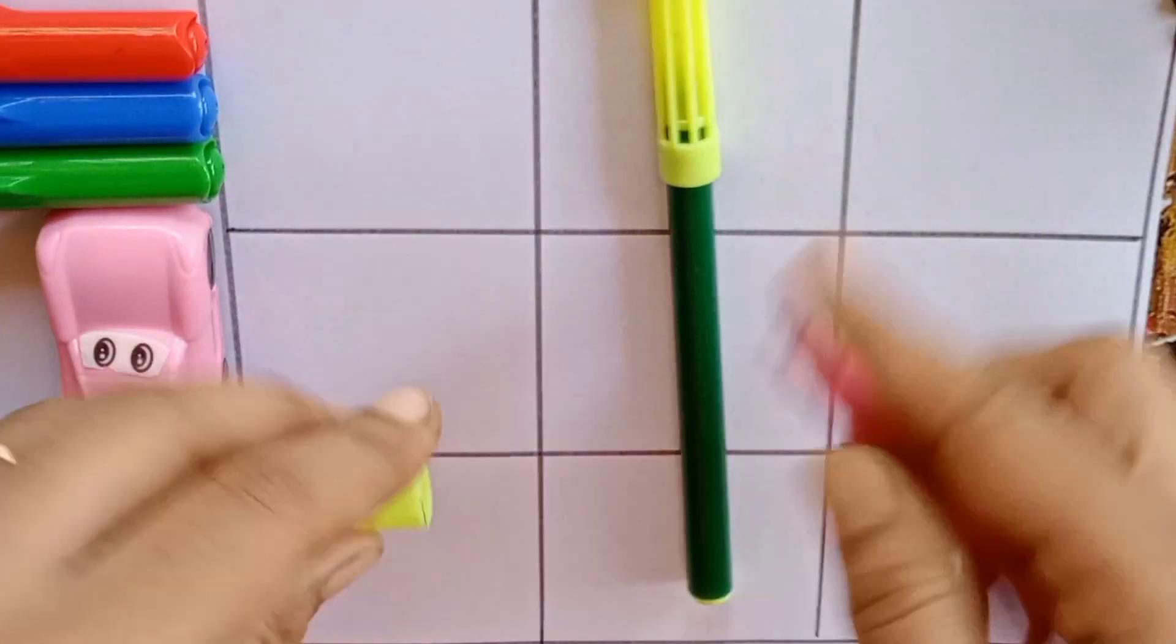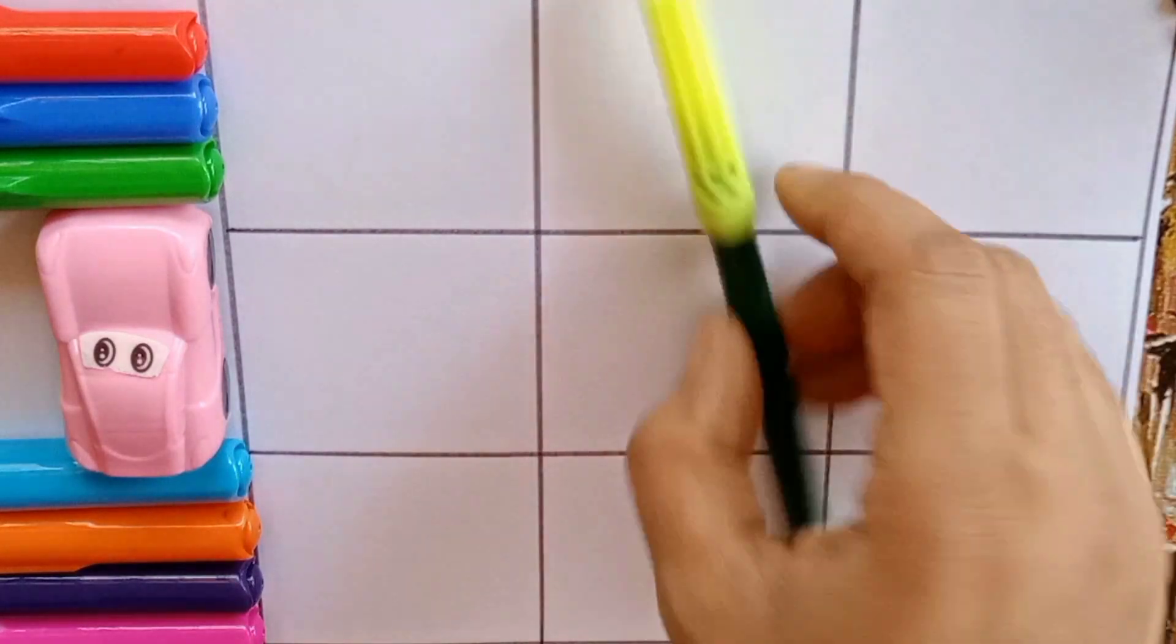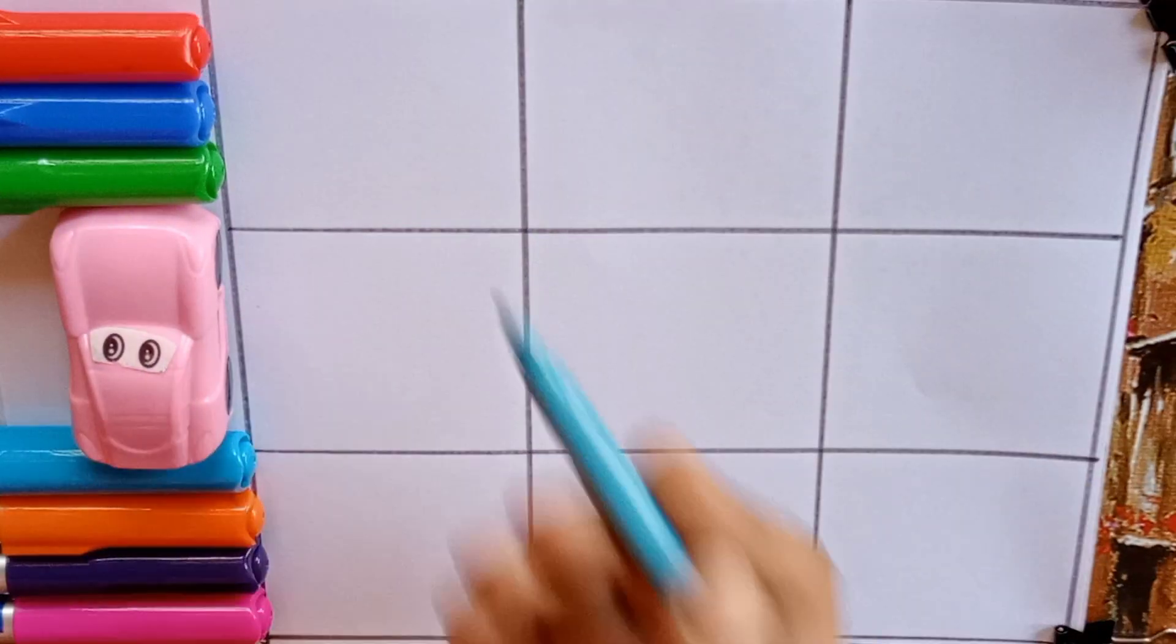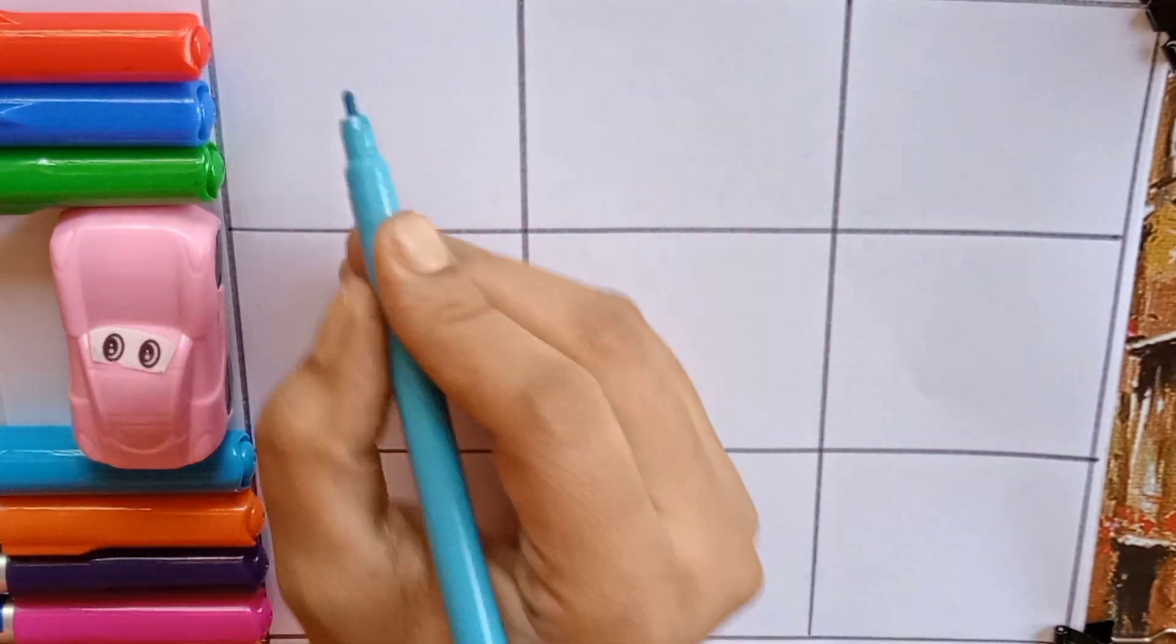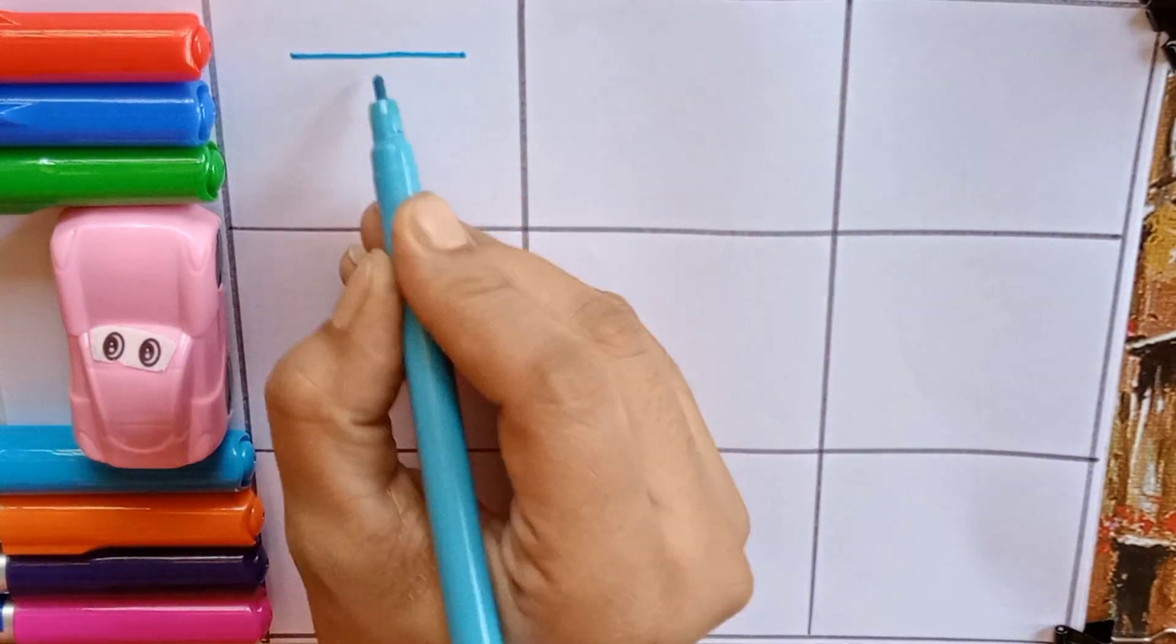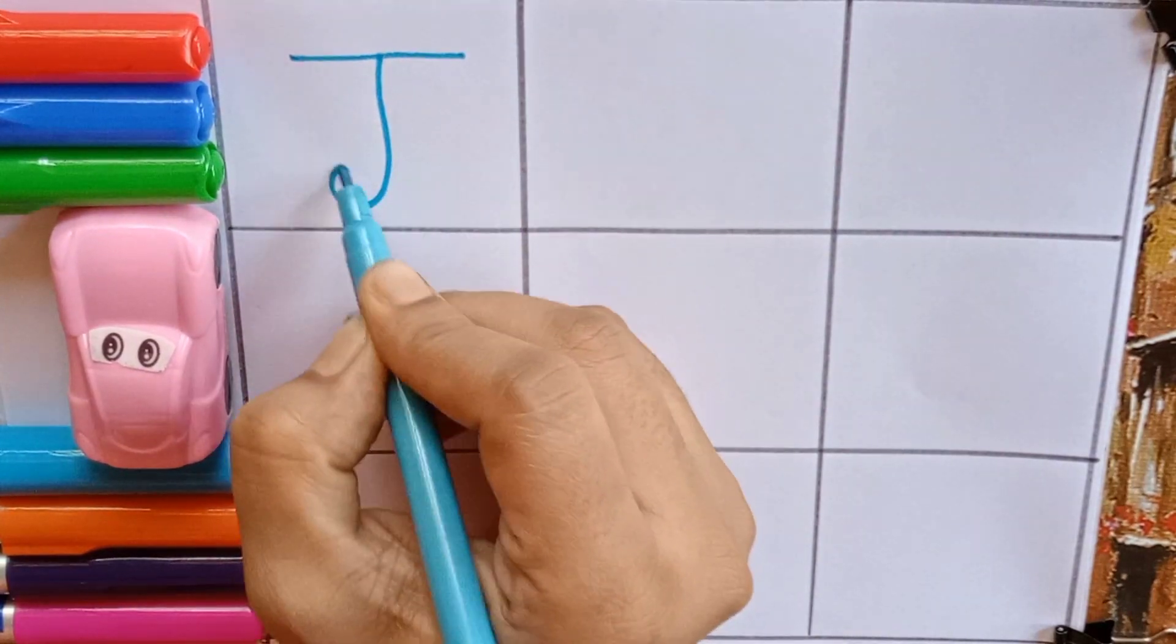Pink color and our last color is green color. Let's learn alphabets. Sky blue J, J for jackal, J for also jasmine.